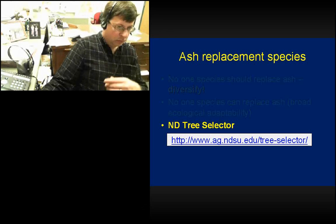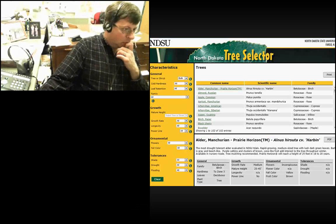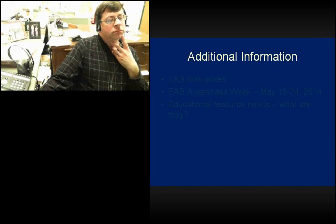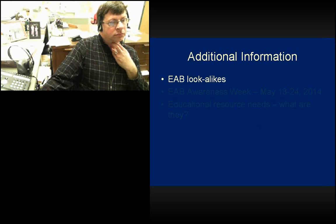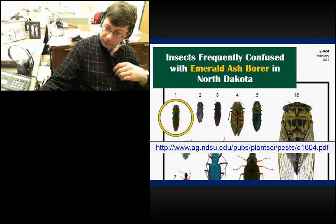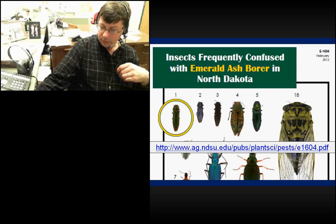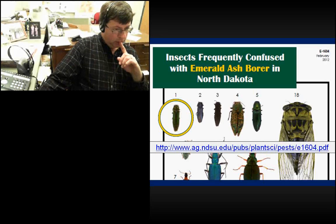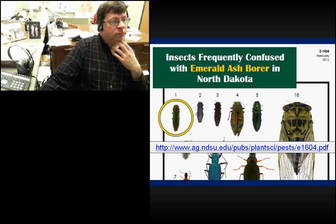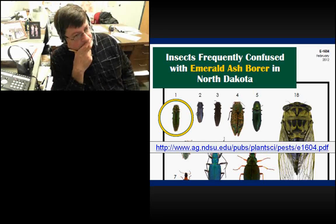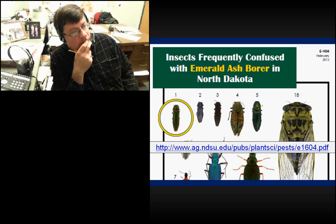There is a publication on EAB lookalikes put together by Jerry Fowski of the entomology department at NDSU — publication E-1604. It's a nice colorful publication listing the most common insects people confuse with EAB, including poplar borer, click beetles, and even cicadas.